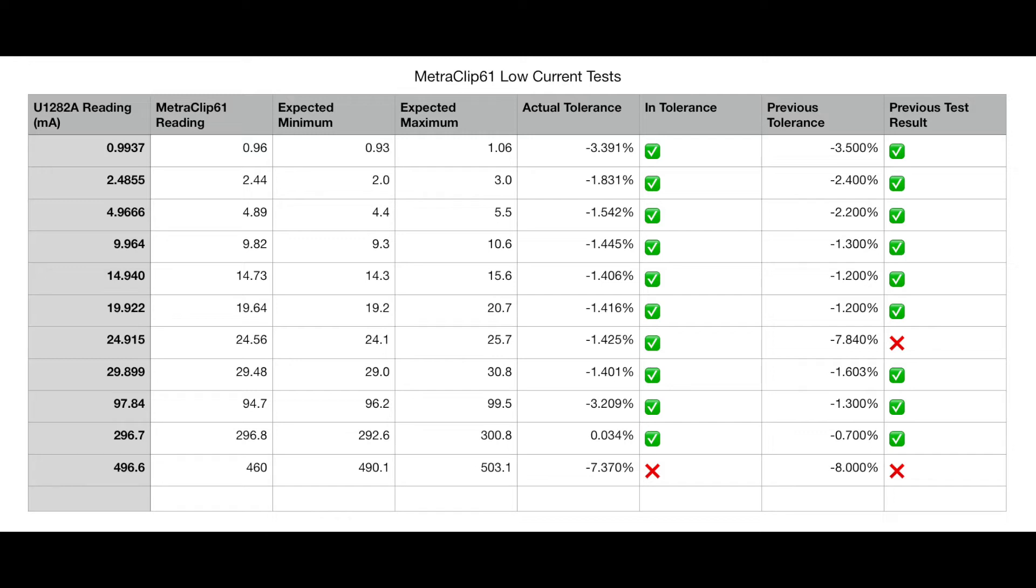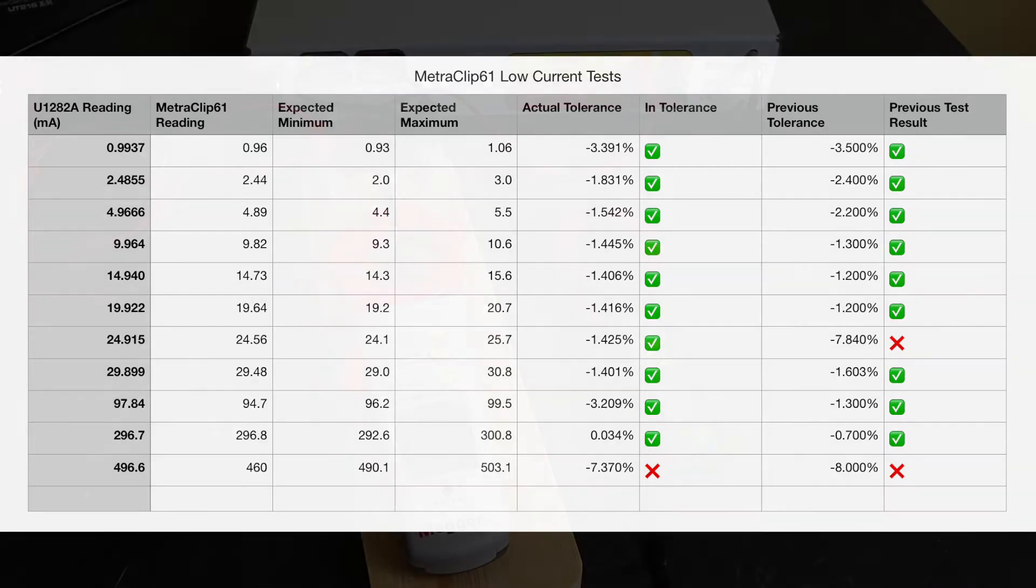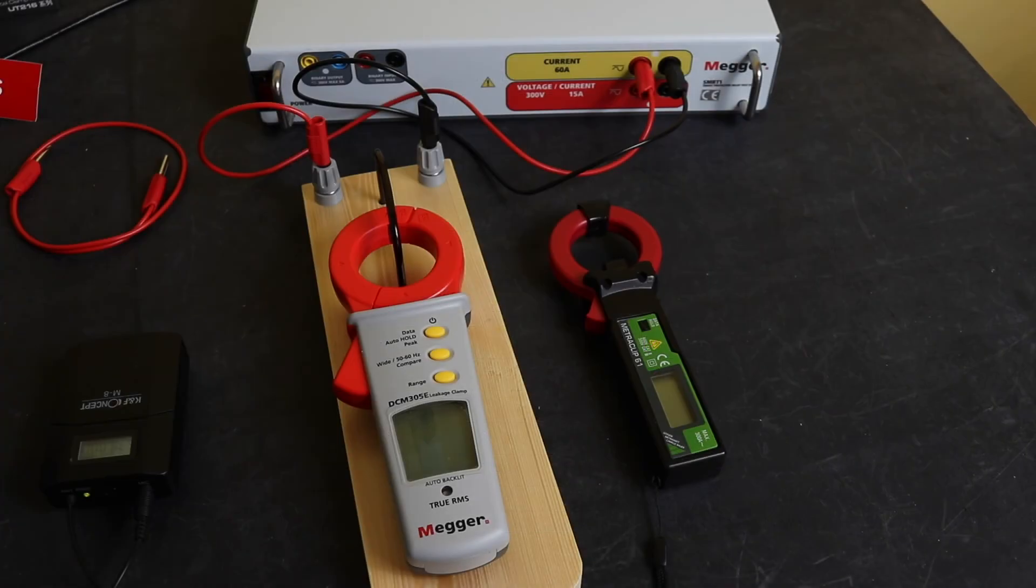Again, if you look at them, there's no real major differences between the tolerances. I guess there's a little bit at 100 milliamps. Again, it was minus 3% this time around but 1.3% last time, but yeah, nothing majorly significantly different. So not sure whether there is an issue with that DCM305E at a certain range or if there's still an issue with my test setup.